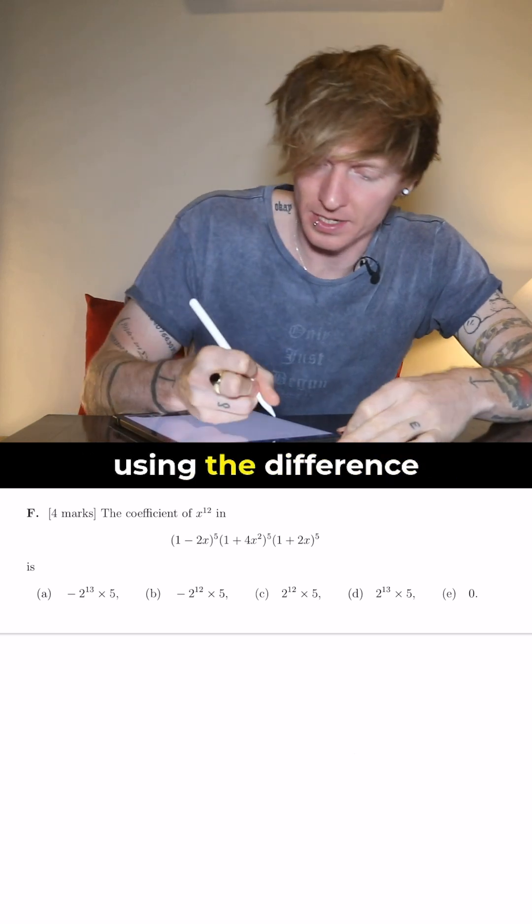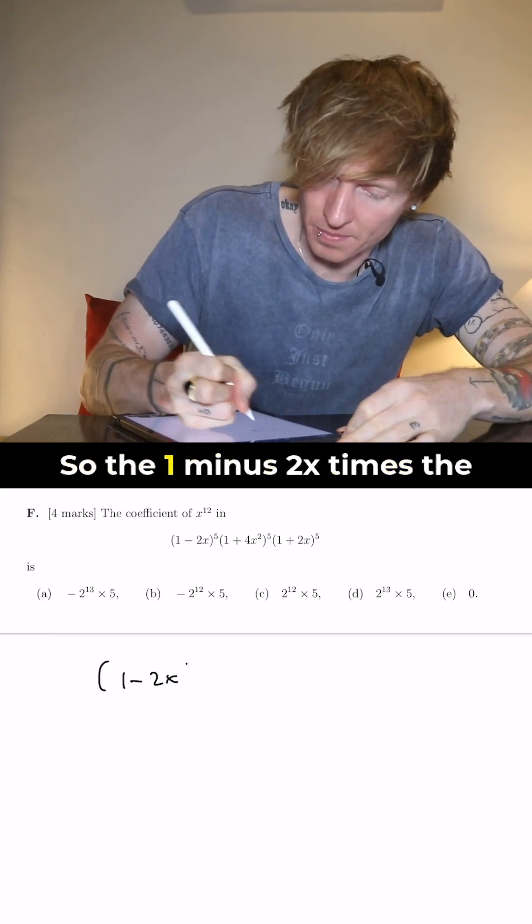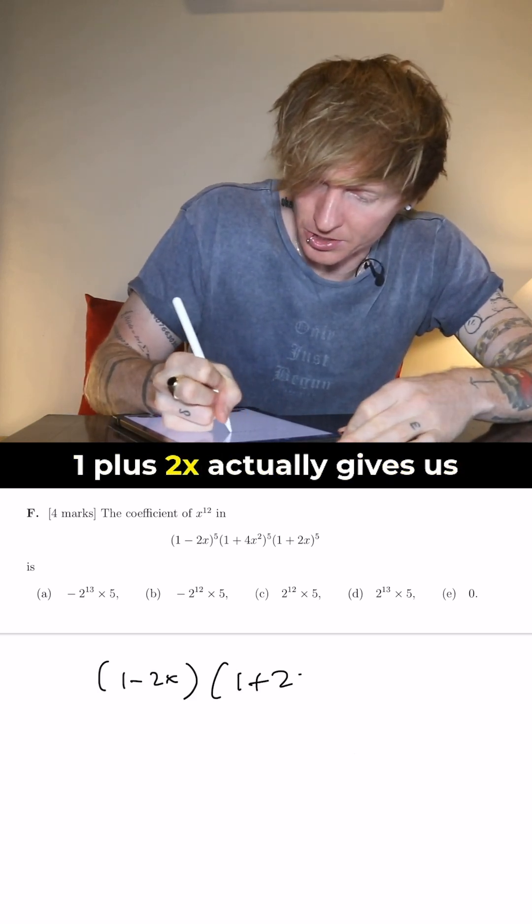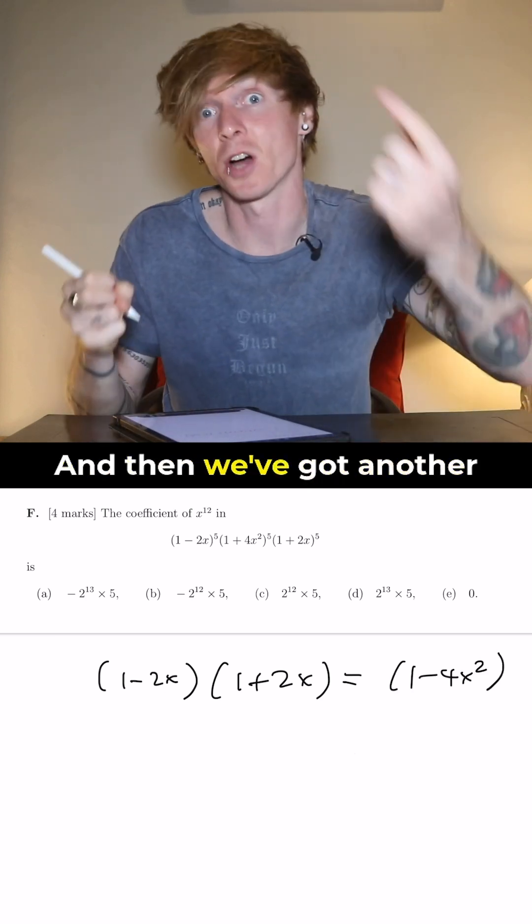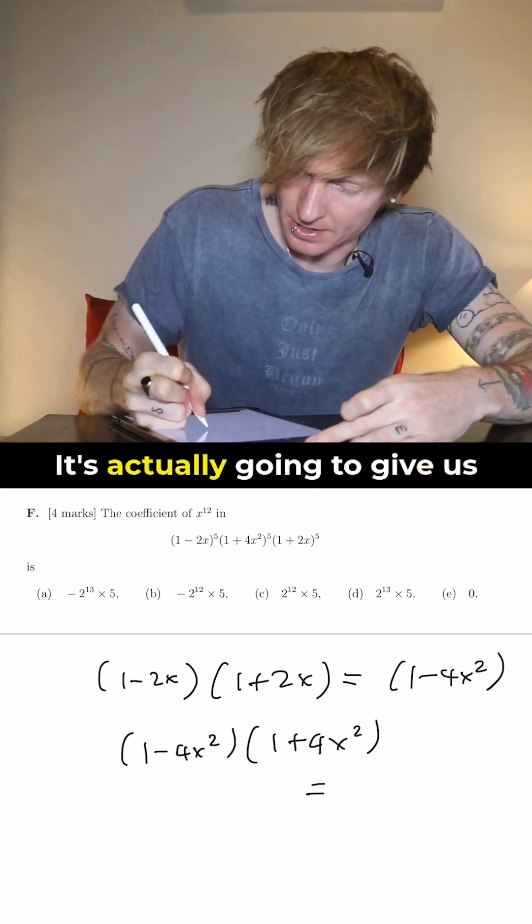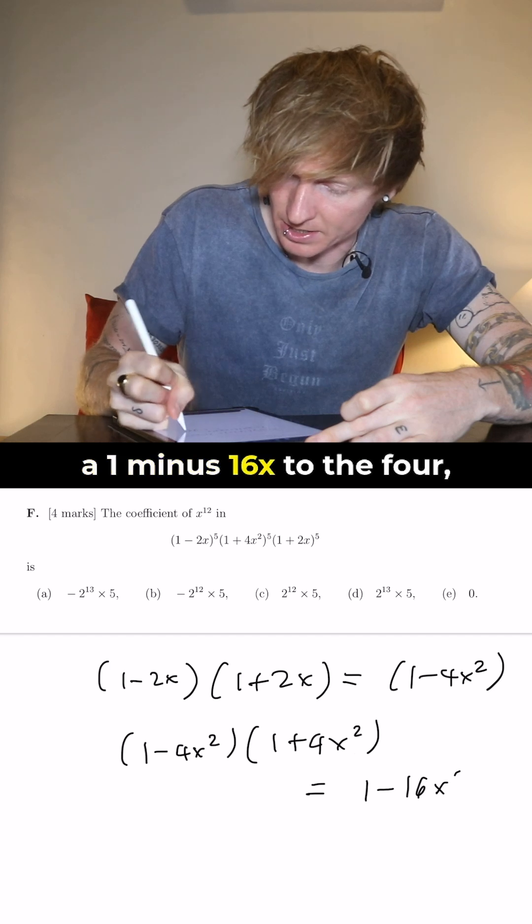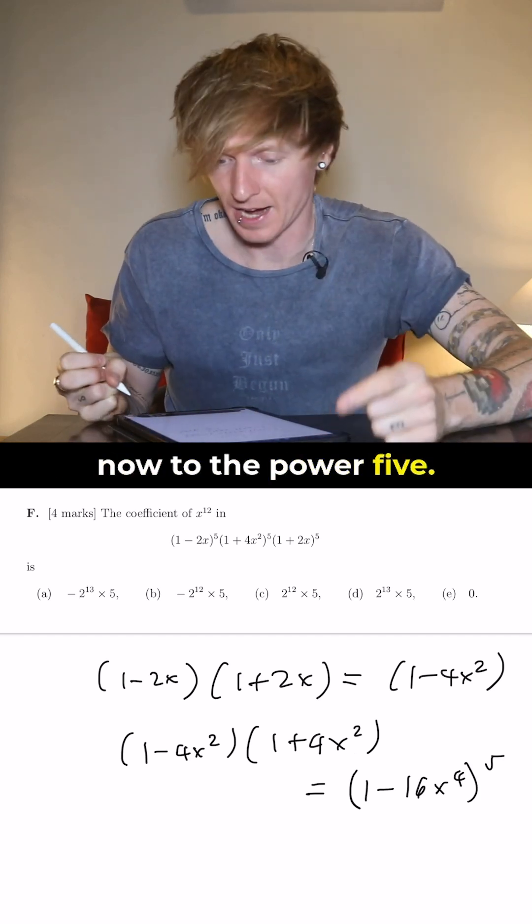We start by simplifying this using the difference of two squares, so the 1 minus 2x times the 1 plus 2x actually gives us a 1 minus 4x squared, and then we've got another difference of two squares. It's actually going to give us a 1 minus 16x to the 4, and then that whole thing is now to the power 5.